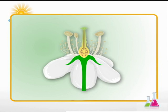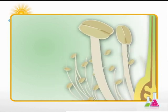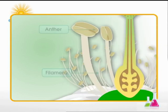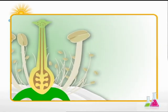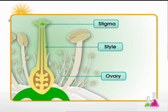A stamen, which is the male reproductive part of the flower, has two parts: the anther and the filament. A pistil, which is the female reproductive part, has three parts: the stigma, the style, and the ovary.